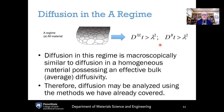Starting with diffusion in the A regime: it is macroscopically similar to diffusion in a homogeneous material possessing an effective average diffusivity. That formula is simply the diffusivity in the crystal times the fraction of atoms in the crystal, plus the diffusivity along the grain boundary times the fraction of atoms at the grain boundaries. This gives you an effective average diffusivity, and you can then treat the material as homogeneous, solving the diffusion problem as covered in Chapter 4 using that average value. The A regime is relatively simple because it can be analyzed using methods already covered earlier in the book.